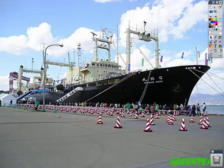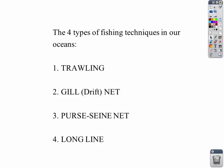The other problem is how we get fish. There are basically four techniques, and each one has their problems. The four techniques are trawling, the gill net, the purse seine net, and long line.